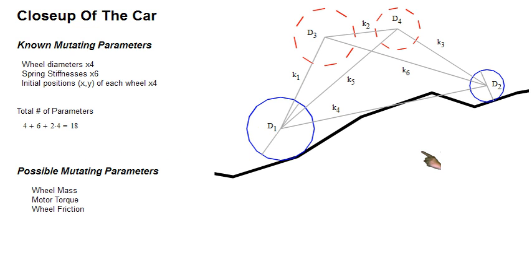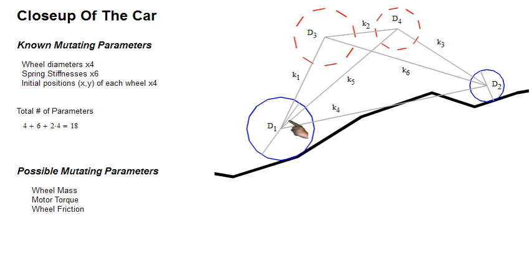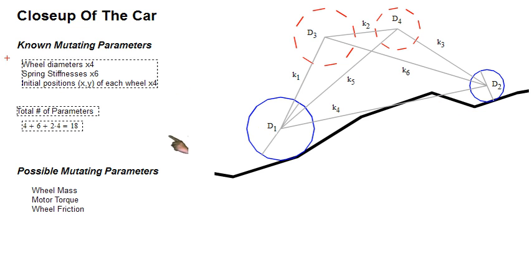I'm not sure if these are the case, but it'd be kind of nifty if they were — like the mass of each wheel, the torque on each motor, or the friction between the wheel and the ground. I suspect they might be there, but I can't tell. But I do know that the previous parameters are there. So anyway, let's see this thing run.